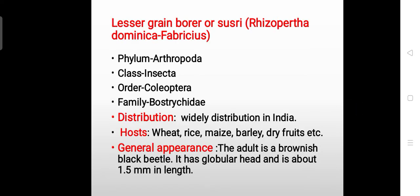Next, the pest is the lesser grain borer, also called Rhizopertha dominica. It belongs to Phylum Arthropoda, Class Insecta, Order Coleoptera, and Family Bostrychidae. It is widely distributed all over India. Host plants include wheat, rice, maize, barley, dry fruits, etc.